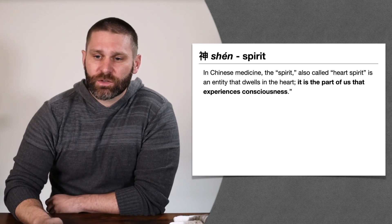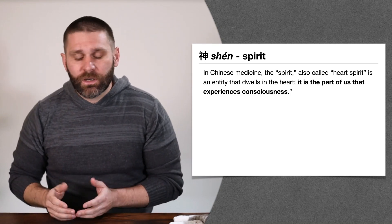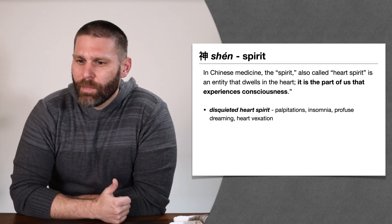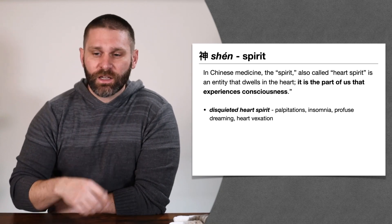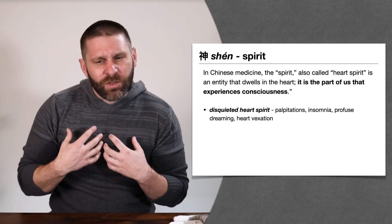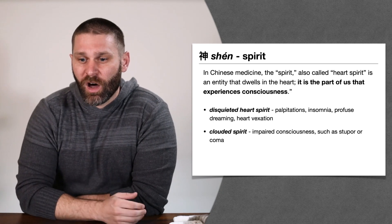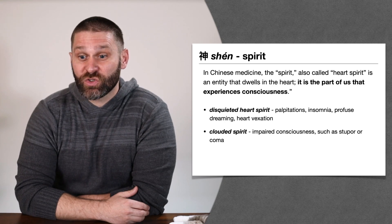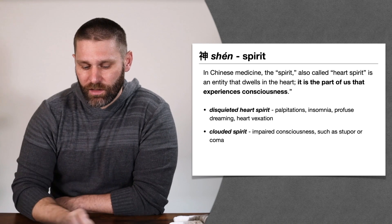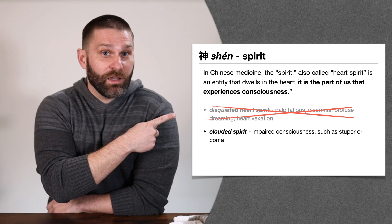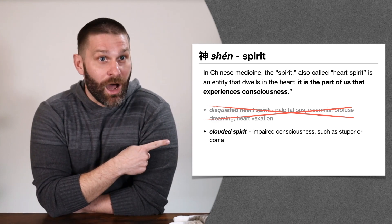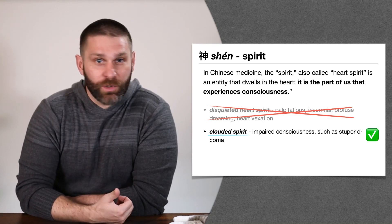When it comes to Shen disturbance, we have two levels. Using Wiseman and Brand's terminology: 'disquieted heart spirit' — palpitations, insomnia, profuse dreaming, heart vexation — means the spirit is uneasy, it can't come home to its abode in the heart. More severe Shen problems would be what we call 'clouded spirit,' referring to impaired consciousness such as stupor or coma, where the Shen is clouded and we start to lose our ability to interact intelligently with the outside world. In this category, we're dealing with clouded spirit, not disquieted heart spirit.